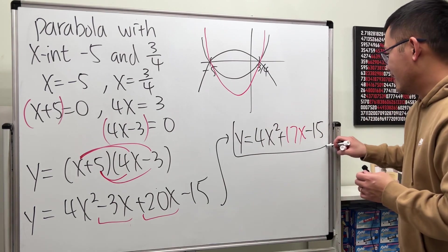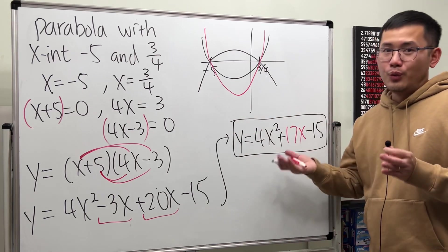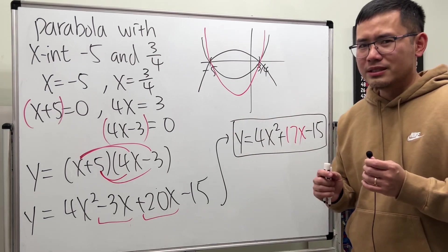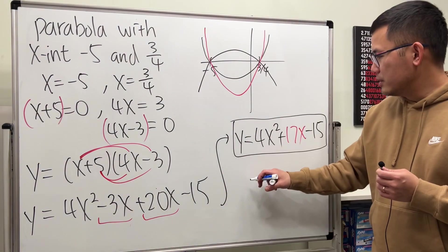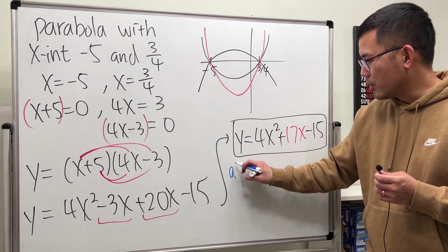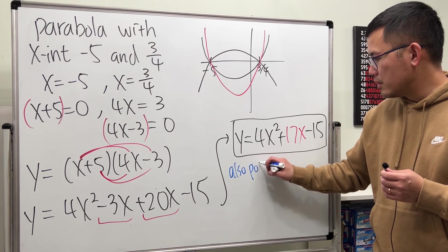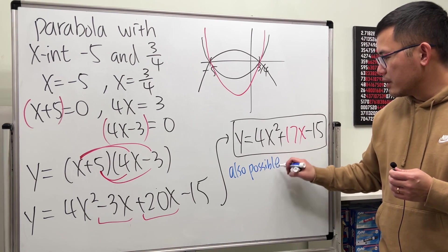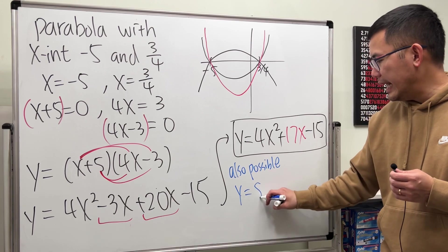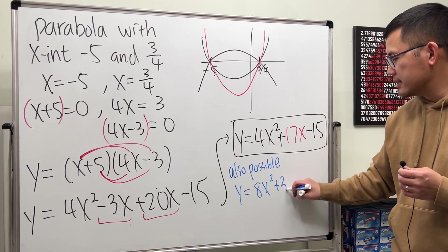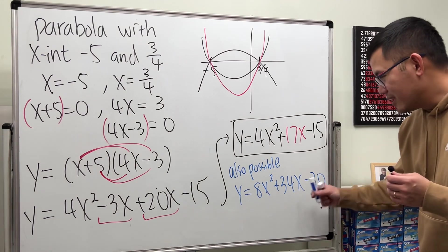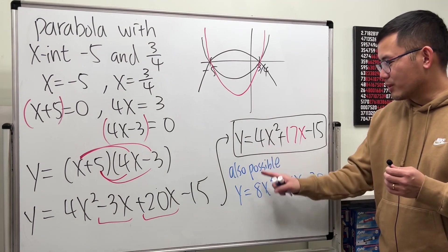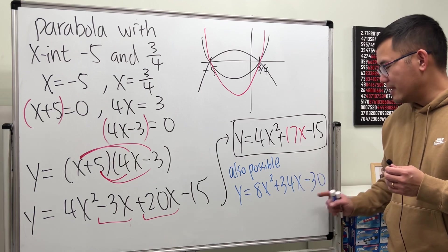So, if that appears in the answer options, then you are done. But sometimes, you may see a tricky question, because if this is the answer, it's also okay, also possible. It's also possible to have y equals 8x squared plus 34x minus 30. How did we get this? Notice I just multiplied all the numbers by 2.